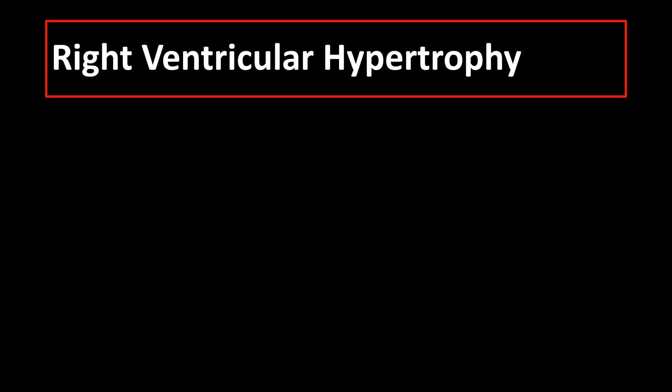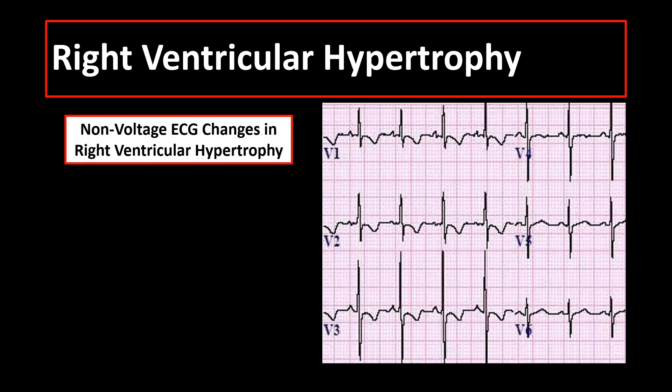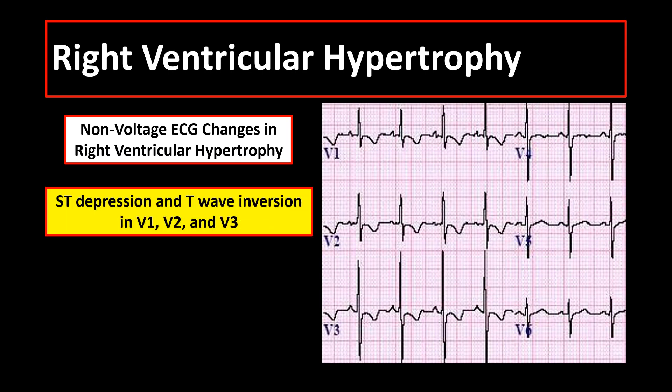There are also non-voltage ECG changes indicative of right ventricular hypertrophy, such as ST depression and T wave inversion in right-sided leads V1, V2, or V3.